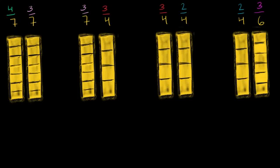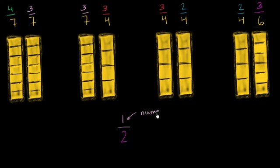When you write a fraction, there are actually words for the top number and the bottom number. And the words are a lot more fancy than 'top number' and 'bottom number.' What mathematicians typically use is the word 'numerator' for the top number, and 'denominator' for the bottom number.